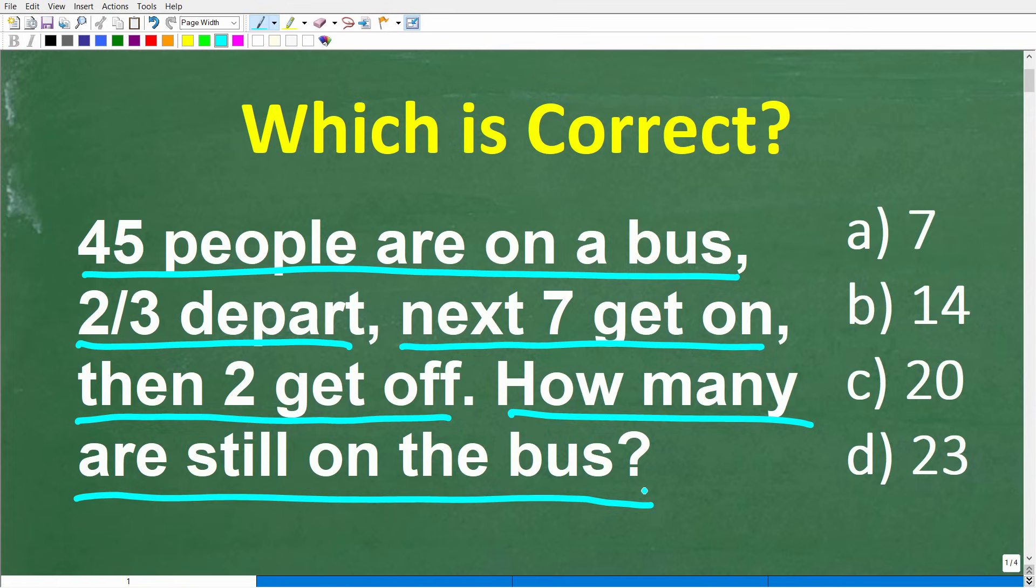All right, so that is the problem, and this is a multiple-choice question. Let's take a look at our answers. So A is 7, B is 14, C is 20, and D is 23.